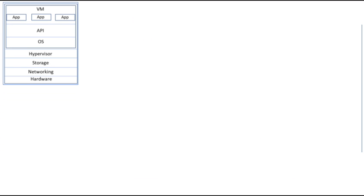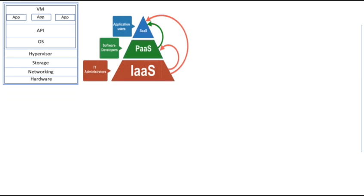There are three different service models for providing cloud services to customers. You can provide Infrastructure as a Service, Platform as a Service, or Software as a Service. Infrastructure as a Service is mainly for the IT administrator as a customer, providing virtualized networking resources, virtualized storage, and possibly access to the hypervisor.